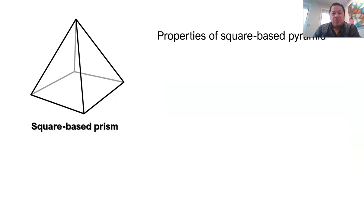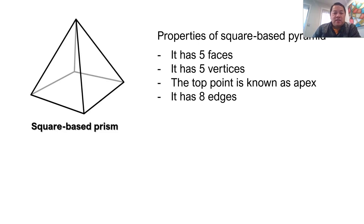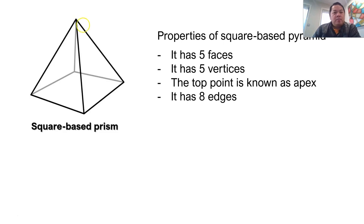So for a square base pyramid, let's look at the three main properties: faces, vertices, and edges. There are five faces — the four triangles and the square base. Five vertices — one, two, three, four on the base plus the top point, which is actually known as the apex. Remember: pyramids have an apex but prisms do not. And there are eight edges — one through eight.